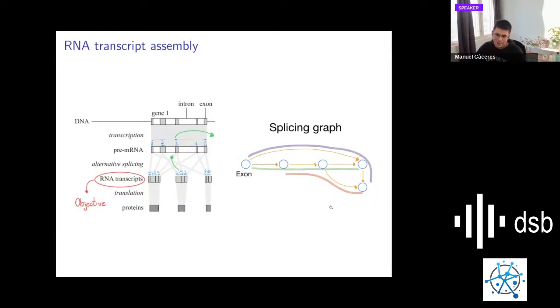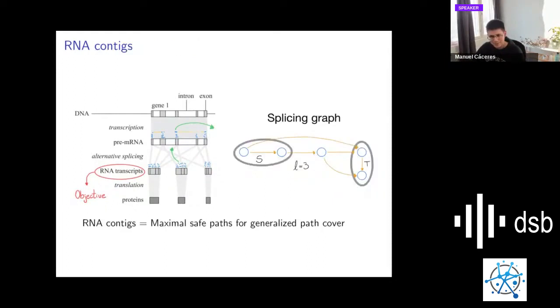If we go back to our definition of generalized path cover, we could use L. We are restricting paths of size at most L to be three, because in this case there are three transcripts. We also know where these transcripts start and where they end. This can be identified by either upward or downward slopes in the mappings of the exon. With this information, we have a generalized path cover. We define the RNA contigs as the maximal safe paths for this generalized path cover.